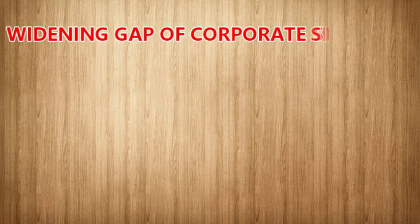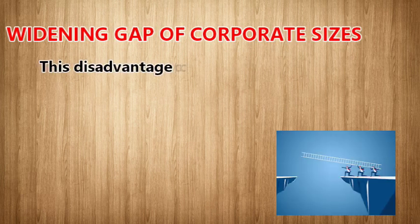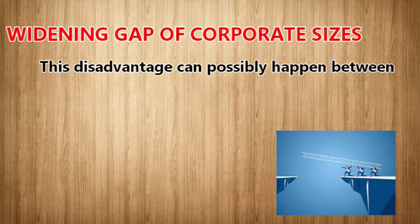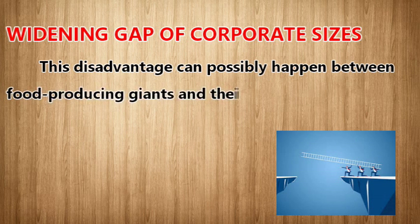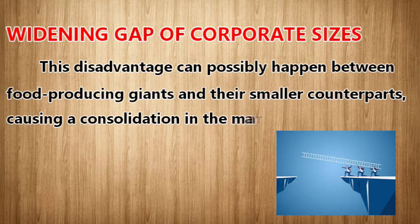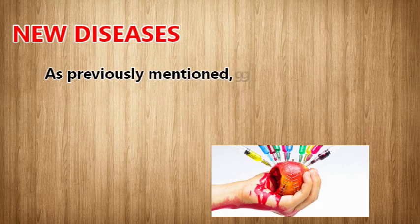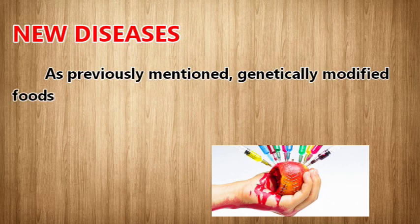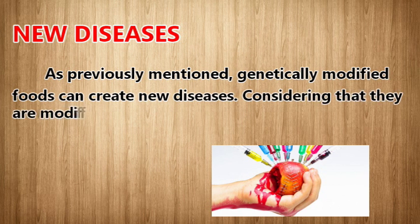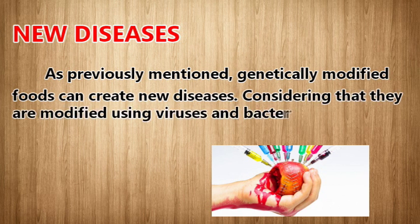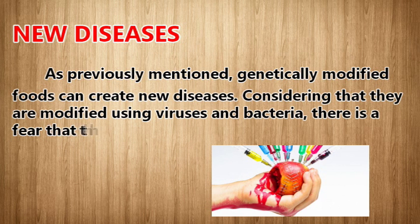Widening gap of corporate sizes: this disadvantage can possibly happen between food-producing giants and their smaller counterparts, causing a consolidation in the market. New diseases: genetically modified foods can create new diseases. Considering that they are modified using viruses and bacteria, there is a fear that this will certainly happen.